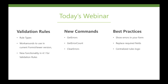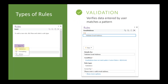Today's webinar is about validation. We've had several requests to add validation to Forms Viewer for many years, and I'm really happy to say that we have it in 4.1. We have three types of rules: a validation rule, a formatting rule, and an action rule. Traditionally, validation rules have been less frequently used than the other two — probably only about 20 percent of forms might have had a validation rule.